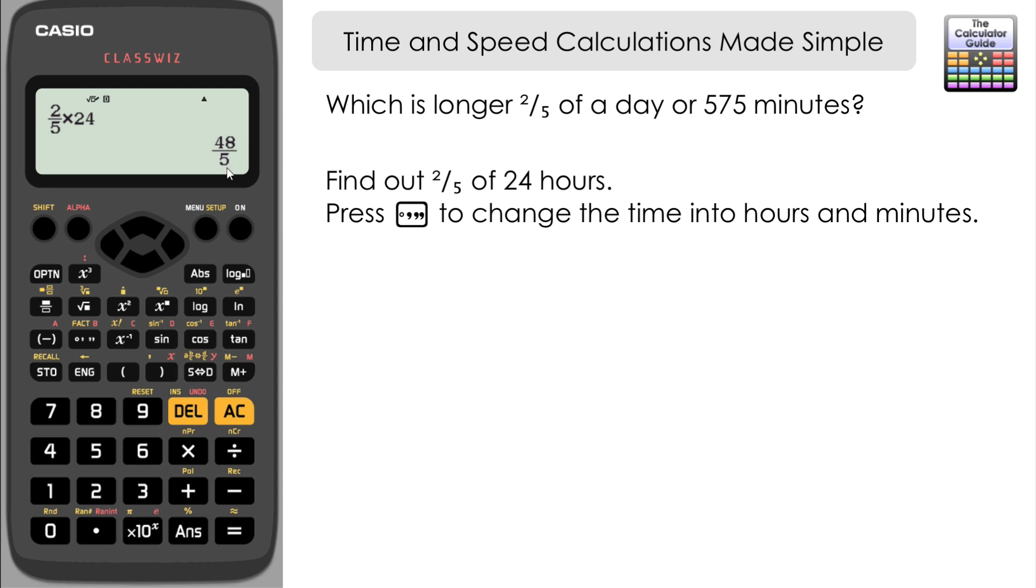But if we press this degrees minutes and seconds button, then that will change it into a time in hours and minutes for us. So two-fifths of a day is 9 hours and 36 minutes.